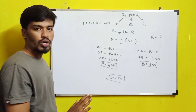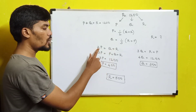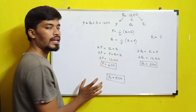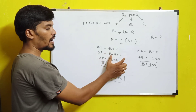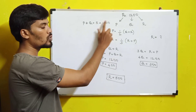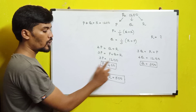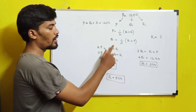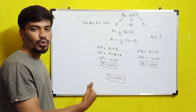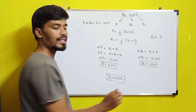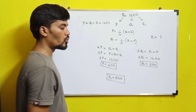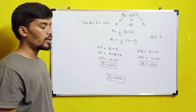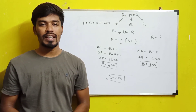Cross-multiplying gives 2P = Q + R. Adding P to both sides: 3P = P + Q + R = 1200, so P = 400. Similarly, solving the second equation and adding Q to both sides gives Q = 300. So P + Q = 700, and subtracting from 1200, R's share is Rupees 500. That is the correct answer for the first question.